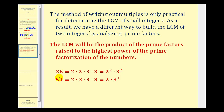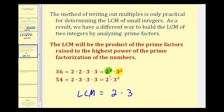For example, the prime factorization of thirty-six is two times two times three times three, which we can write as two squared times three squared. The prime factorization of fifty-four is two times three times three times three, which we can write as two to the first times three to the third. To build the LCM, we'll need to use the unique prime factors of two and three, raised to the highest power found on either number. Looking at two squared and two to the first, we'll use two squared. Looking at three squared and three to the third, we'll use three to the third. So the LCM of thirty-six and fifty-four is two squared times three to the third.